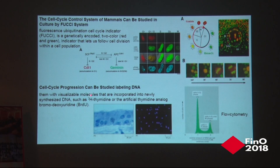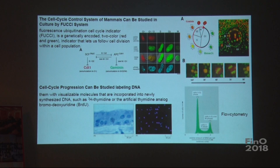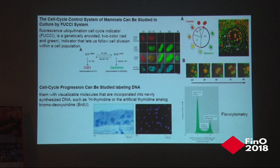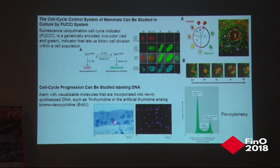Other methods include labeling the DNA for flow cytometry, where the DNA content differs in different phases of the cell cycle, allowing you to determine which phase the cells are in. You can also label cells using nucleotide analogs and examine them under the microscope with antibodies, or use radiolabeling and autoradiography.